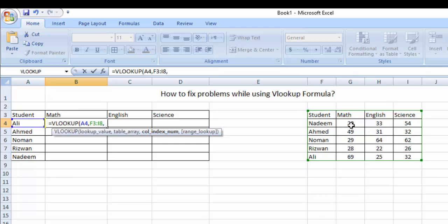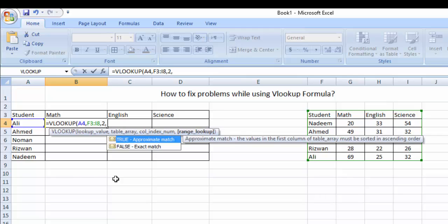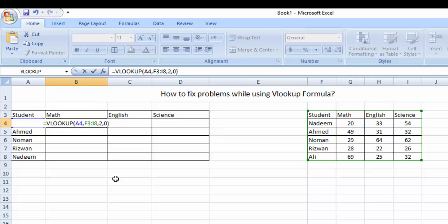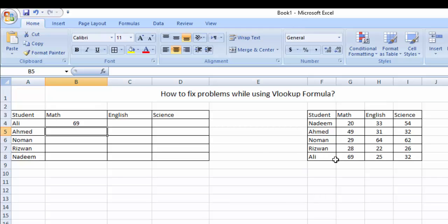What is the column in this box? It's the second column. So we will type 2, 0. It must be 0. And then bracket close and enter. As Ali obtained marks in Math 69, here you can see, it gave me the right answer.